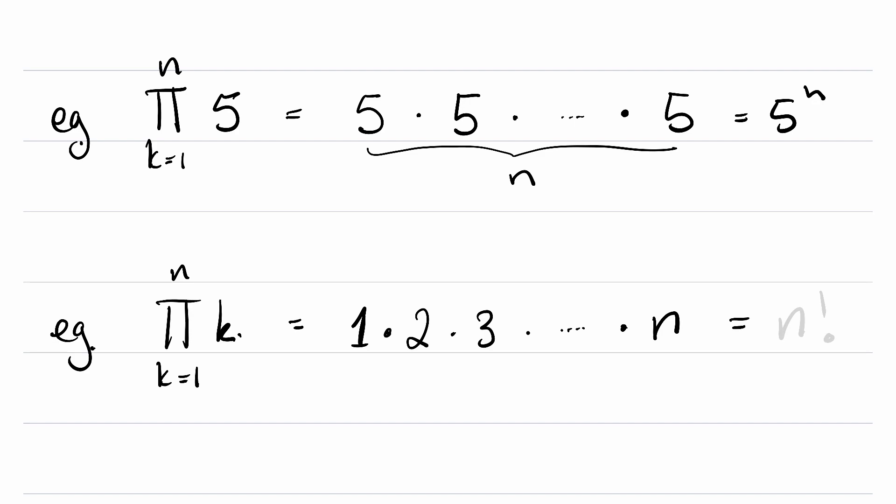So this is a product notation expression for the product of all the natural numbers between 1 and n, otherwise known as n factorial.